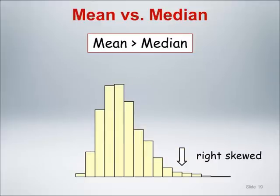If the histogram has a long tail off to the right, as shown here, we say that the histogram is right skewed. This implies that the mean is larger than the median. The long tail indicates that there are larger values pulling the mean higher.